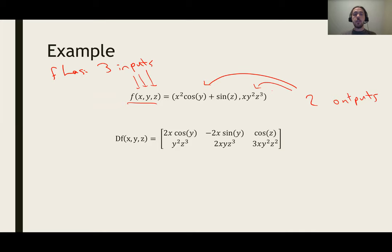The derivative matrix that we produce is going to combine all the possible ways to take a partial derivative of one of the outputs with respect to one of these inputs. So each row goes with an output and each column goes with an input.